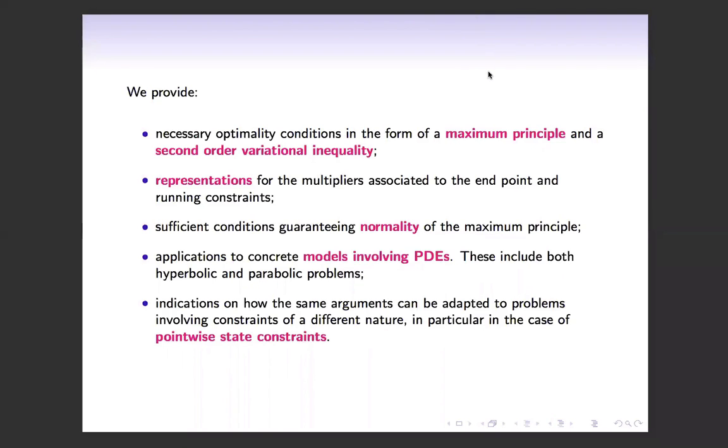The results are stated in a general abstract setting, but they can be applied to concrete problems involving PDEs. We provide examples with hyperbolic and parabolic equations. Even if the results are stated for optimal control problems under functional inequality state constraints, the same arguments can be adapted to problems involving constraints of a different type. In the paper, we show how to adapt the arguments to the case of pointwise state constraints.